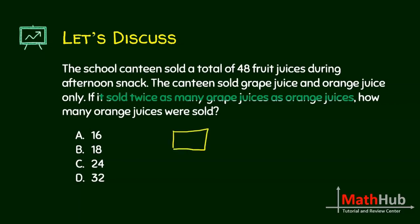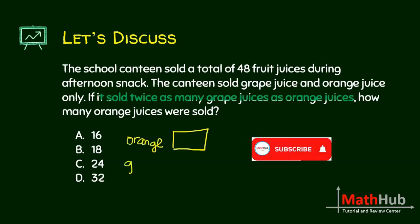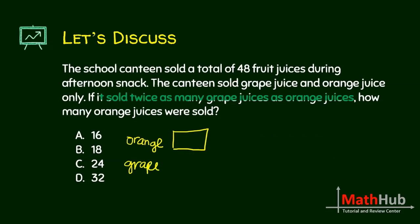We represent the number of orange juices by one box. But the number of grape juices was twice as many, so when you say twice, we have two boxes. Then it says here that you have a total of 48 fruit juices, so when you add this up, this is 48.